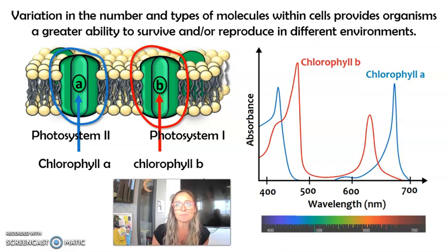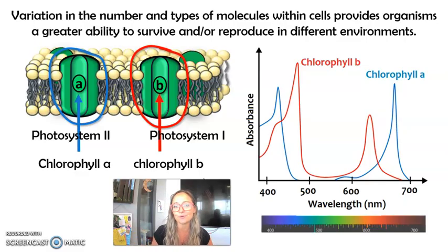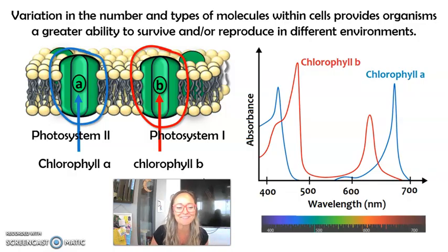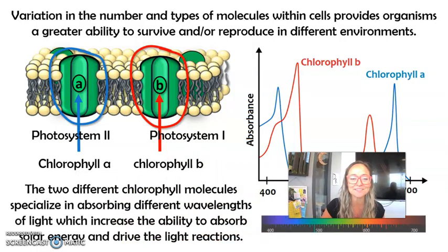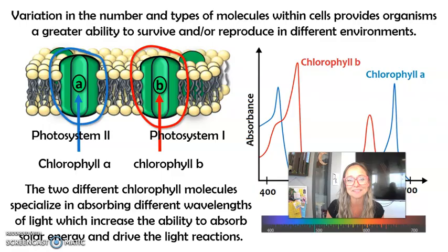Why this matters: if a plant is growing in shade, like at the bottom of a forest, you may have different wavelengths of light in that shady environment versus direct sunlight. The light is not all even when it strikes a plant, so having the ability to absorb different wavelengths is beneficial. To summarize: the two different types of chlorophyll molecules specialize in absorbing different wavelengths of light, which increases the ability to absorb solar energy and drive the light reactions. That's all for Topic 3.7, and I hope this was helpful.